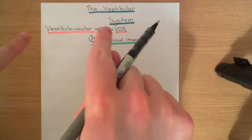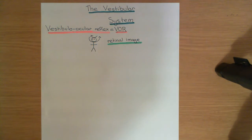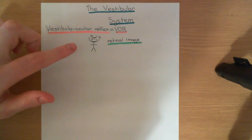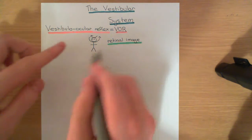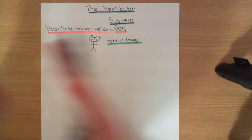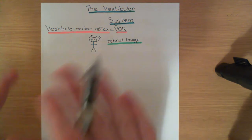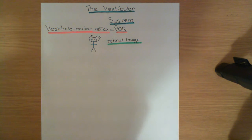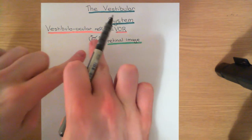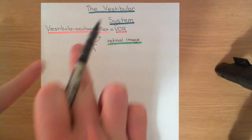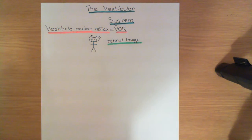The vestibulo-ocular reflex keeps the eyes in the same position despite head movement, requiring changes in extraocular muscle contraction. You can observe this on yourself with small head movements. If movements are too large, the reflex fails because the eyes simply can't move further relative to the skull. The vestibular system's role is sensing that head movement and telling the eyes how much to turn in the opposite direction to maintain the same retinal image.